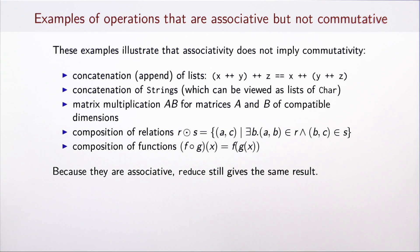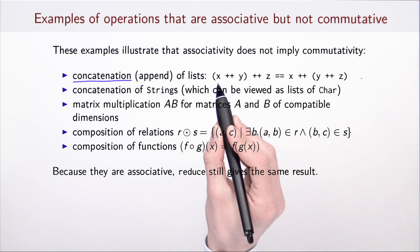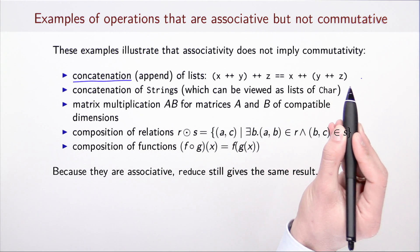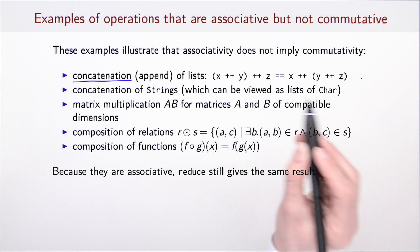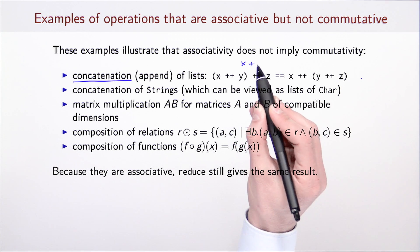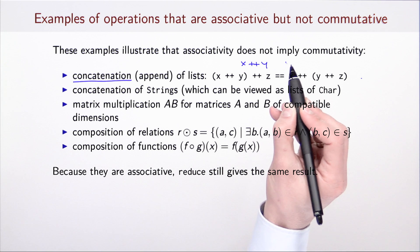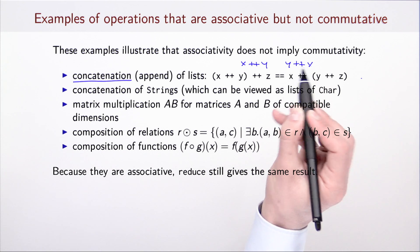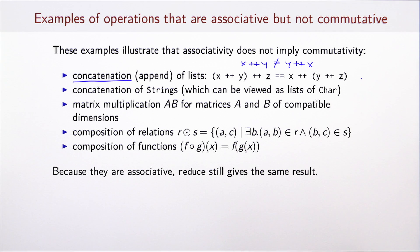In addition to examples of operations that are both associative and commutative, there is a number of operations that are associative but not commutative. A prototypical such operation is concatenation or append of lists. The associativity holds for the append operation, but it is not the same if we compute x concatenated with y or y concatenated with x. These are two distinct lists that happen to have the same length, but the order of elements is not the same.